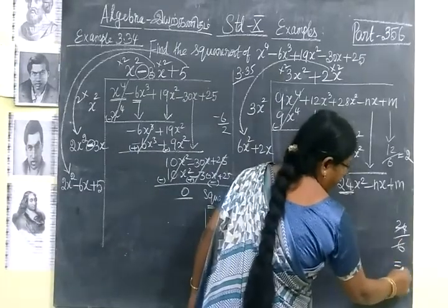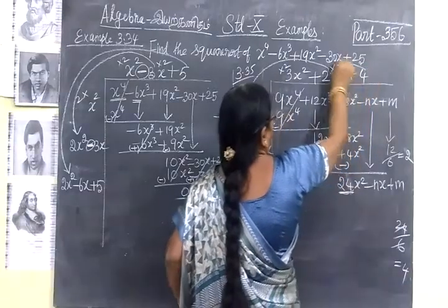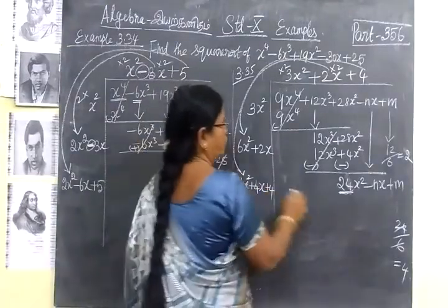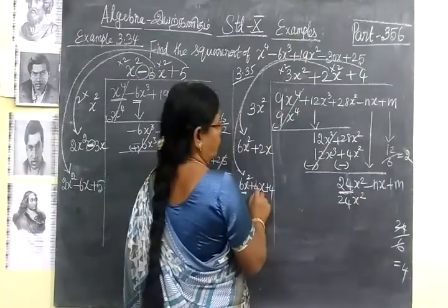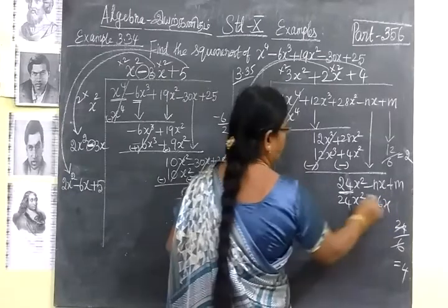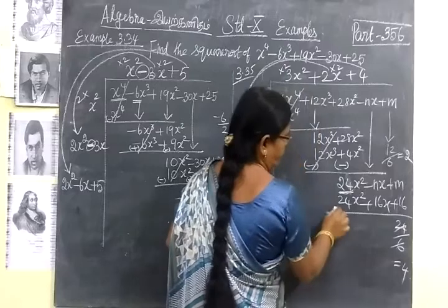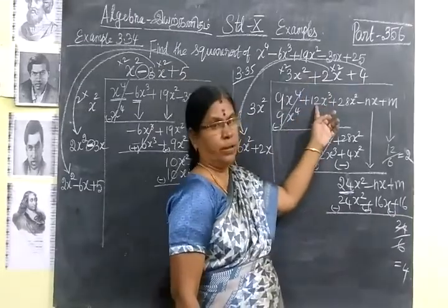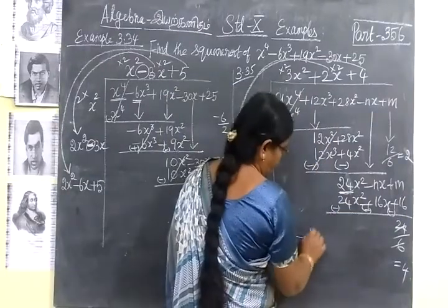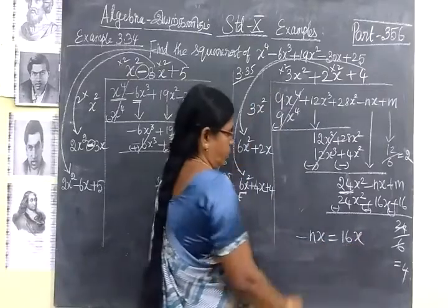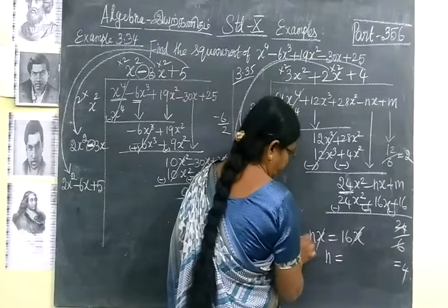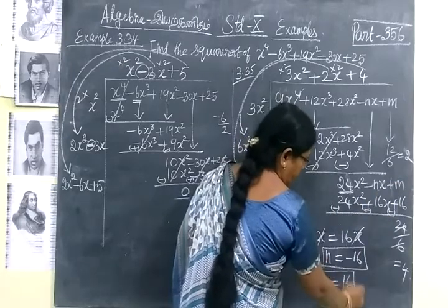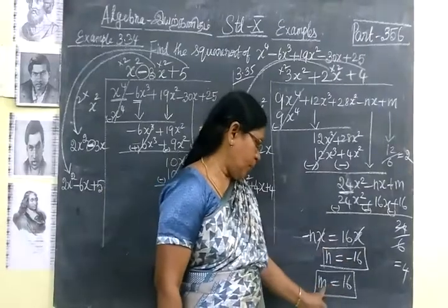So you get 4. Write 4, and in the 4 order we are multiplying this term. So 4 into 6 is 24x square. Then 4 into 4 is 16x. Again 4 into 4 is 16. So since we want the remainder to be 0 if it is a perfect square, you can compare. This minus nx is equal to 16x, so the answer implies n equal to minus 16. Then next compare: m equal to 16.